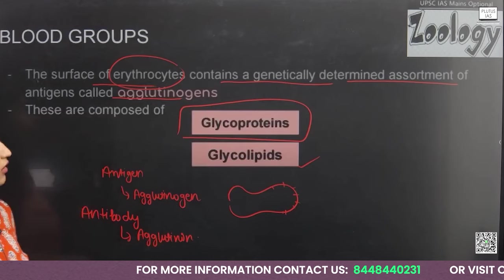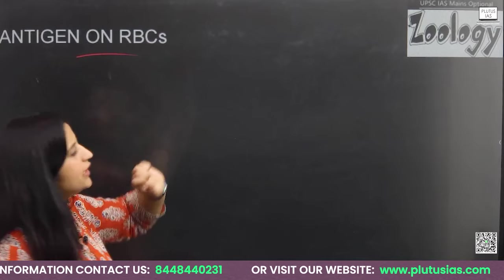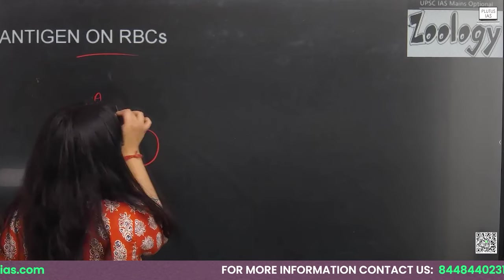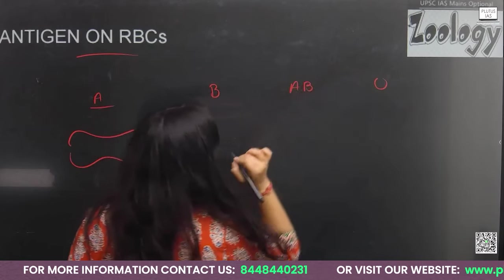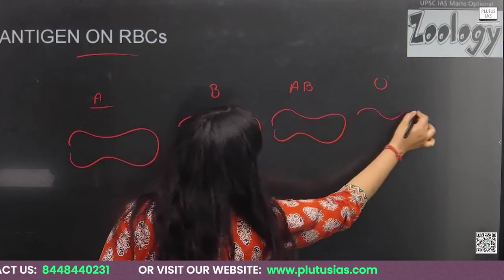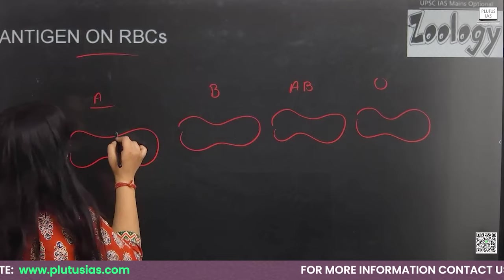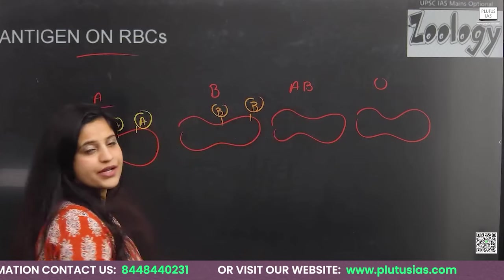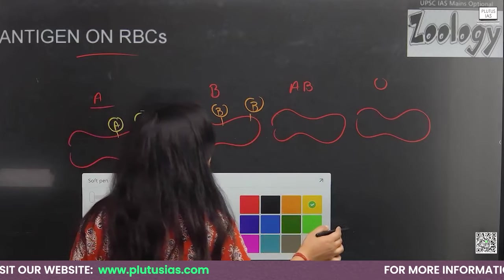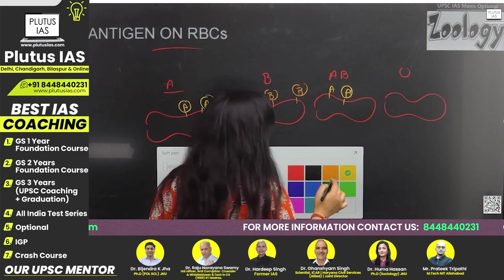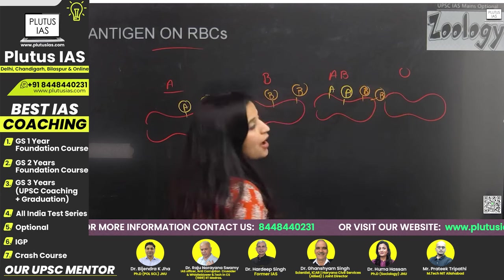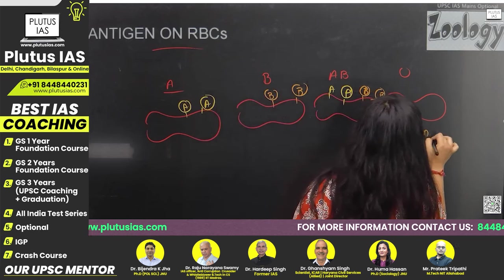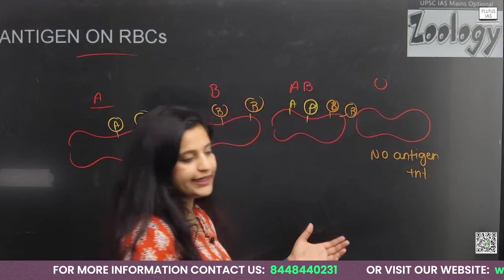There are antigens on the surface of RBCs. According to the ABO system, we have four types of blood group: A, B, AB, and O. A blood group persons have A antigen on the surface of RBC. B blood group persons have B antigen. AB blood group persons have both antigen A and antigen B on the surface of RBC. But O blood group persons don't have any antigen on the surface of RBC — no antigen is present.